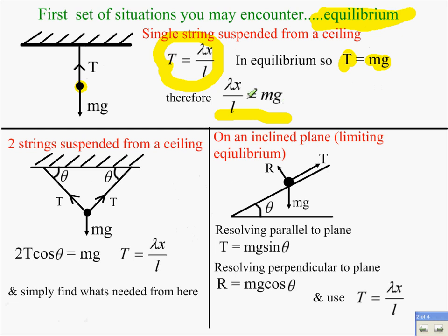So you might need to just do some rearranging. Second situation, where you have two strings suspended from a ceiling. In this situation, again, you're looking at resolving vertically and you're looking at using Hooke's law, and then just see what's needed from the question from there.